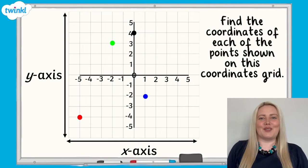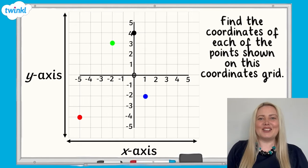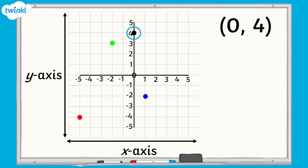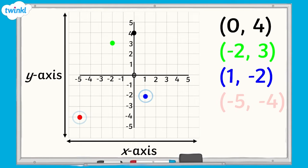Pause the video now and have a go. Let's take a look at the answers. The coordinates of the black point were 0, 4. Of the green point were negative 2, 3. Of the blue point were 1, negative 2. And of the red point were negative 5, negative 4.